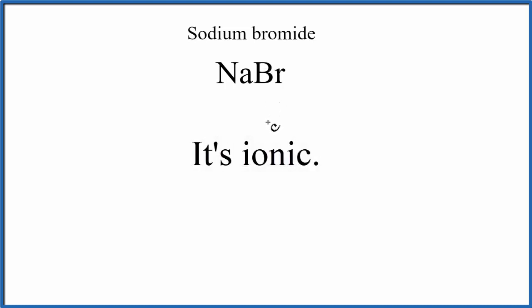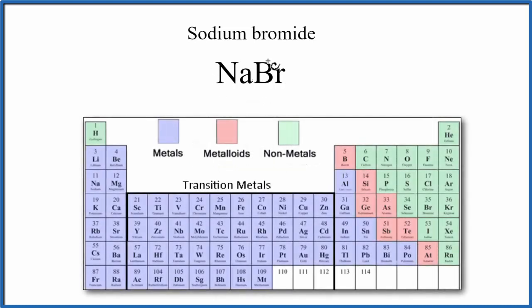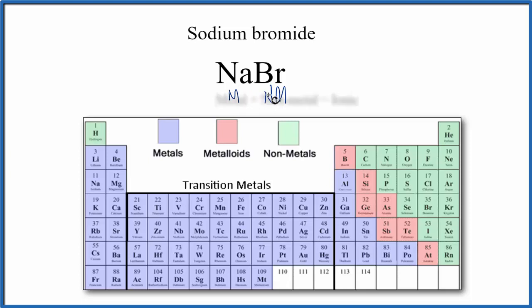There are a few ways that we can tell. The first one is to look at the makeup — the elements that make up NaBr. Sodium is a metal. Bromine is a non-metal. In general, when we have a metal and a non-metal, we have an ionic compound.